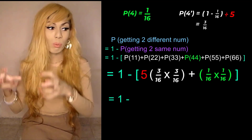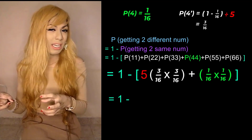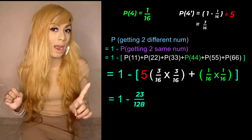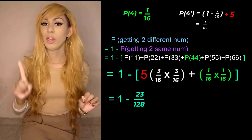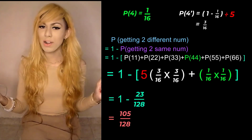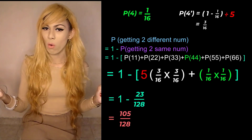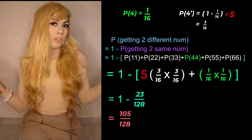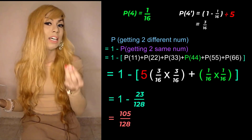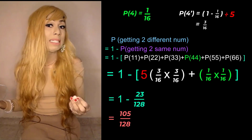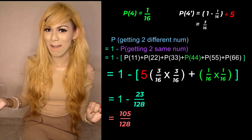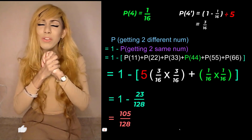We calculate the bracket and get twenty-three over one hundred and twenty-eight. Then one minus twenty-three over one hundred and twenty-eight gives us one hundred and five over one hundred and twenty-eight. That is the final answer for the probability of getting two different numbers.